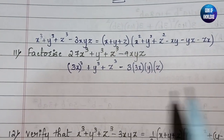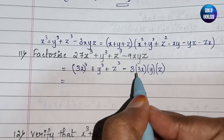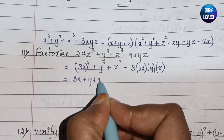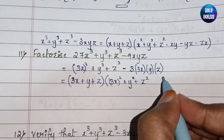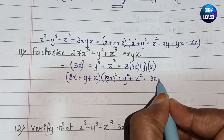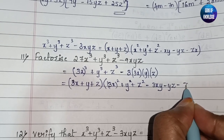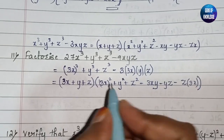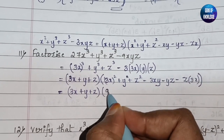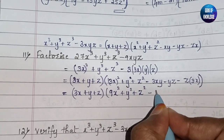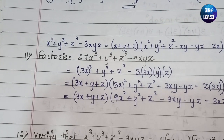We are getting x as 3x, y as y, and z as z. So we open it up in the identity format: (3x + y + z) into [(3x)² + y² + z² - (3x)(y) - yz - z(3x)]. This becomes (3x + y + z)(9x² + y² + z² - 3xy - yz - 3xz). This is your final answer.